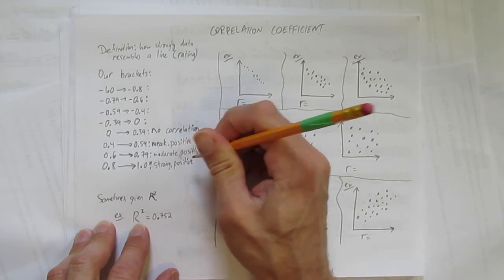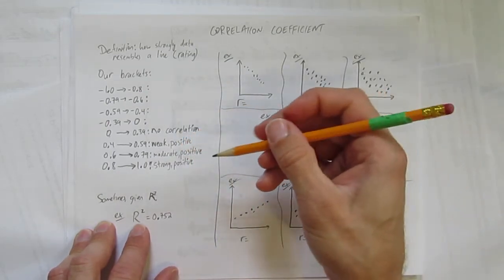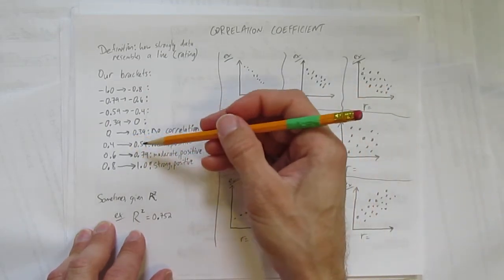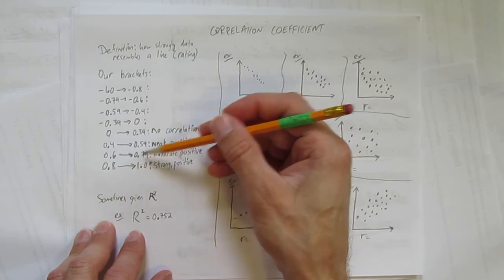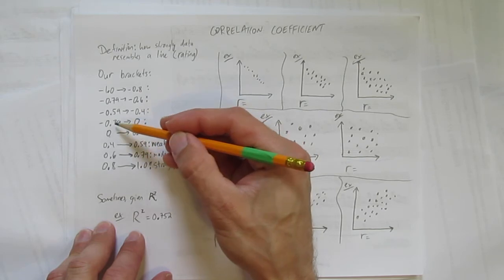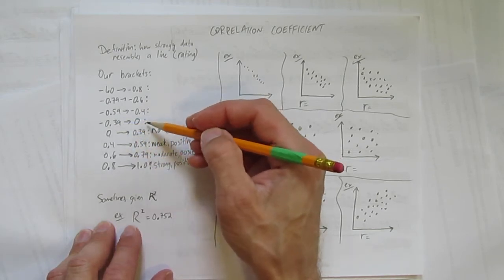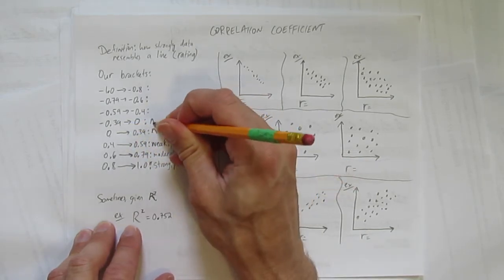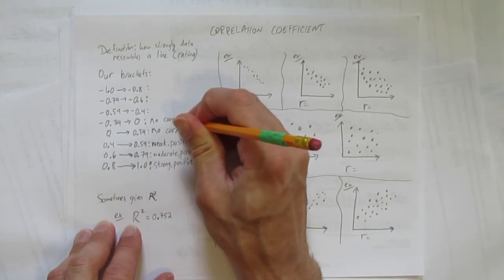Now I think the negatives are easy to understand. It's the same type of thing except instead of the data going up to the right it goes down to the right. So take a look, if you're at negative 0.39 all the way down to 0, you're not weak, you have no relationship. We'll call that no correlation.